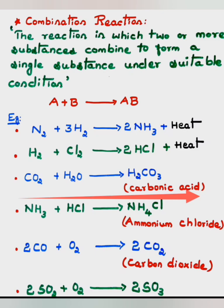Example 3: CO₂ + H₂O — carbon dioxide combines with water to give carbonic acid (H₂CO₃). These two separate compounds combine to form a new compound. Example 4: NH₃ + HCl — ammonia combines with hydrochloric acid to form ammonium chloride (NH₄Cl).